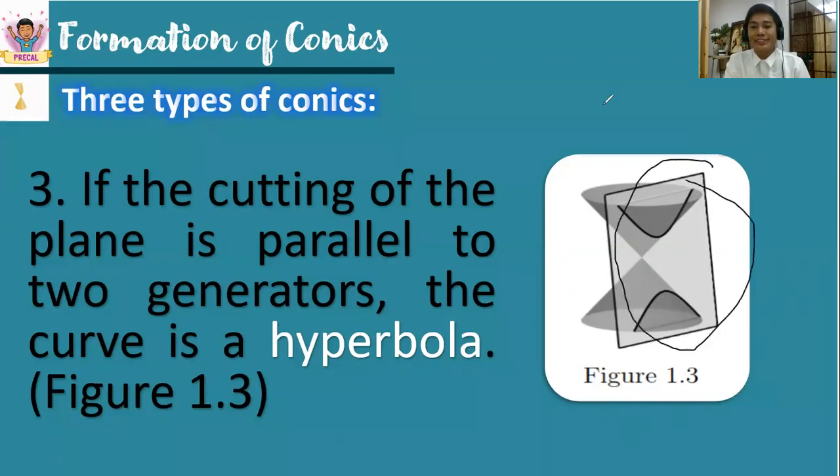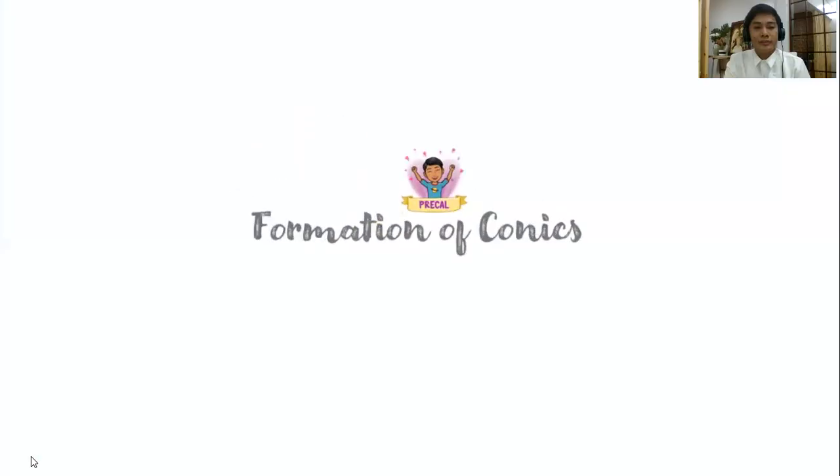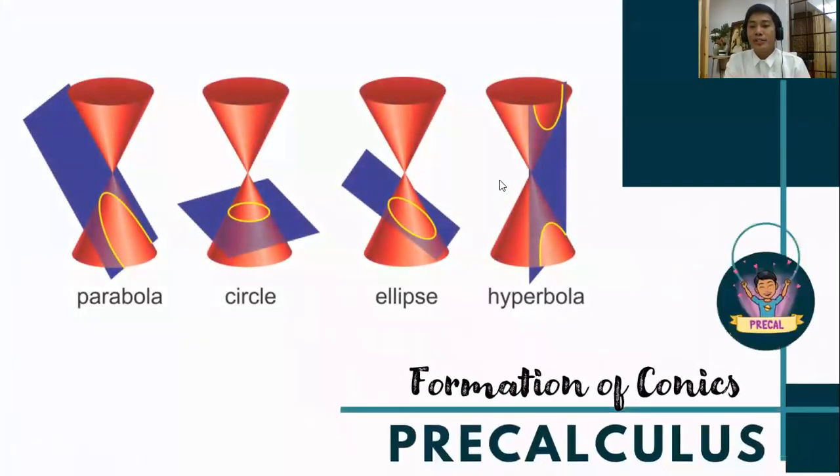In the formation of conics, the blue illustrations here illustrate the plane and the red are the double right circular cones. Observe how they intersect with each other, forming our conics.